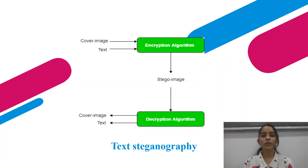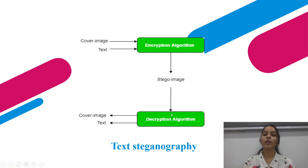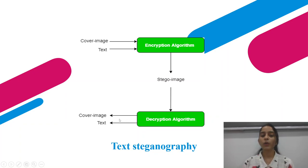Here is the diagram of text steganography. We provide a cover image and text as input, apply an encryption algorithm that converts it into a stego image. Then during decoding, a decryption algorithm decodes it and converts it back into the cover image and original text.